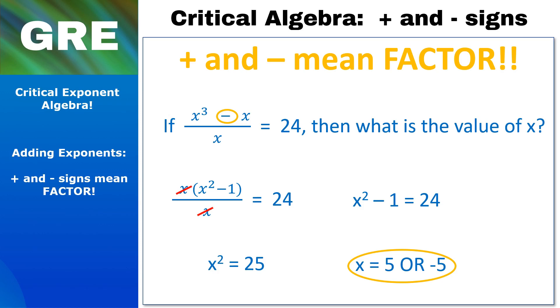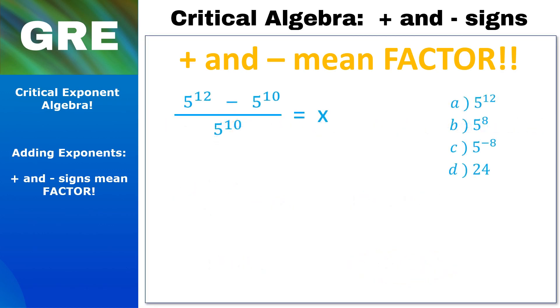Nice job. Let's try a trickier one. This is a classic example. Remember, 5¹² minus 5¹⁰ does not equal 5², even though they really want you to believe that. The minus sign tells us as clearly as the test will ever tell us anything to factor. So we have 5¹⁰ on each side of the minus sign. So we factor that out to the left and put what's left over in the parentheses.